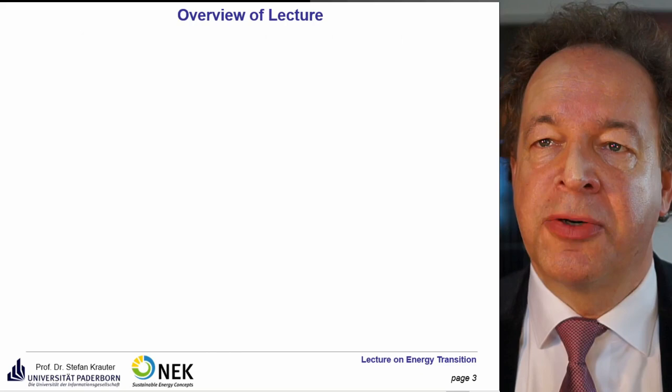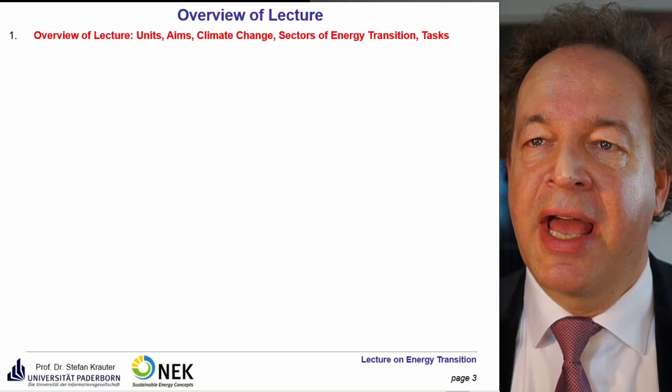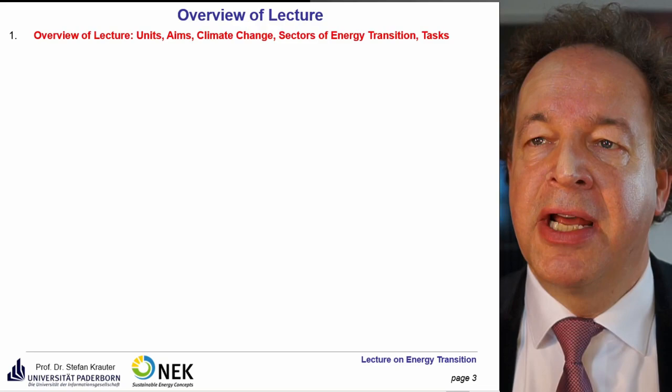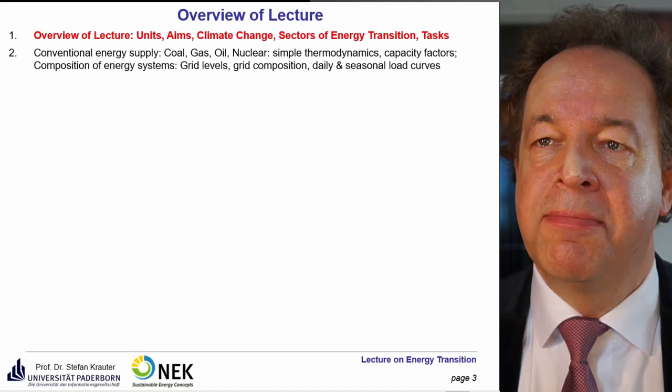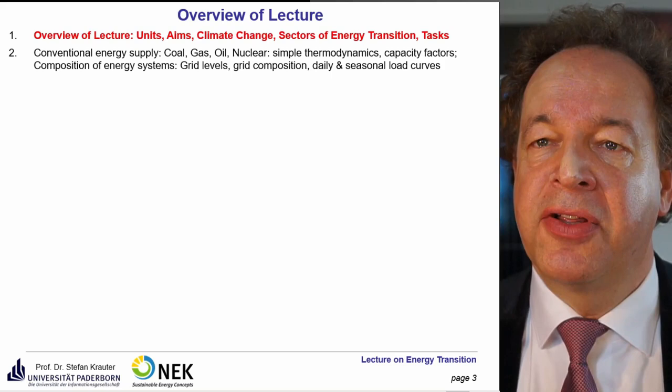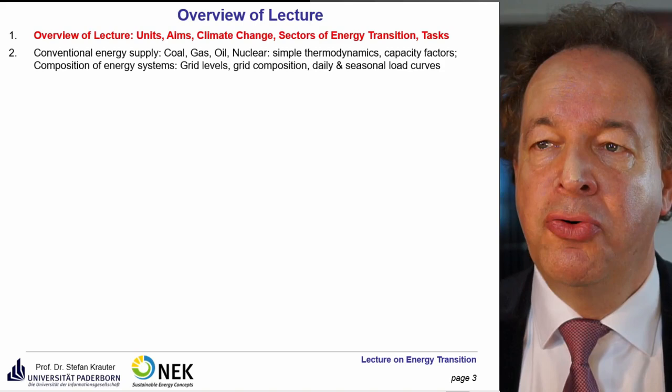I'll give you now an overview of the lecture. Today is the first lecture: we discuss units, aims, climate change, and the sectors of energy transition. Next lecture we will talk about conventional energy supply such as coal, gas, oil, and nuclear, covering simple thermodynamics, capacity factors, comparison of energy systems, grid levels, grid composition, and daily and seasonal load curves.